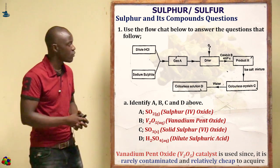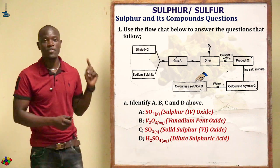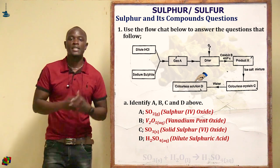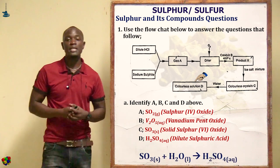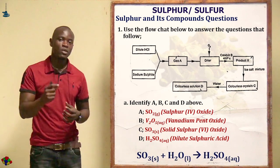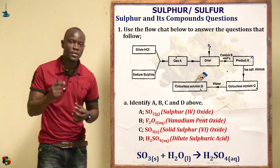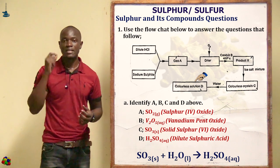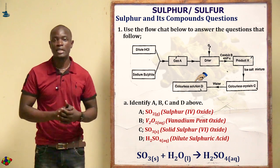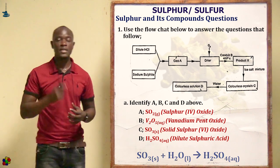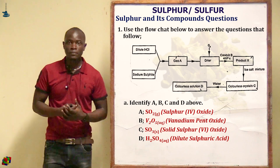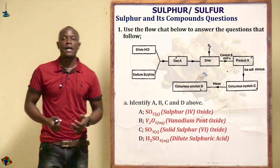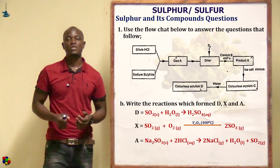For letter D, we have a colorless solution. That colorless solution D is dilute sulfuric acid. Question B asks us to write the reactions which form A, X, and D.